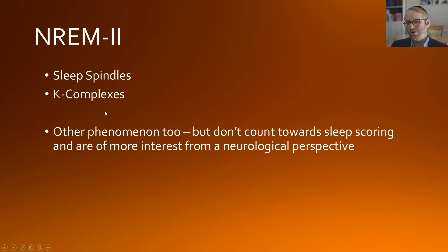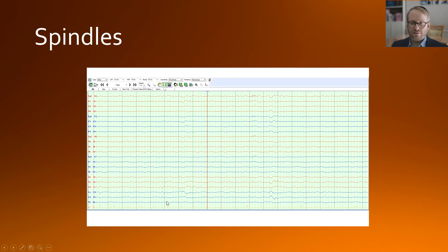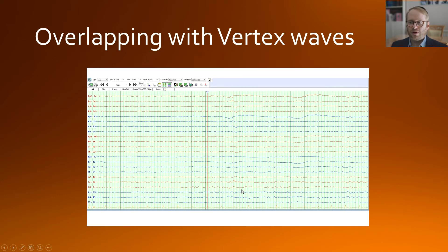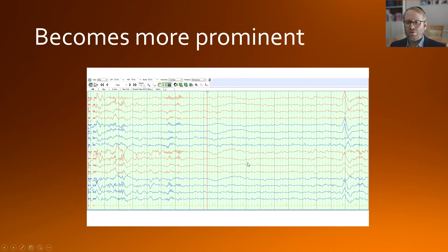There are other phenomena of interest from a neurophysiologist's perspective that can also occur in non-REM 2, but they don't factor into sleep scoring and are more of neurological interest. After the V waves become more prominent, one starts to see the emergence of sleep spindles, which at some point start overlapping with the vertex waves and become designated as k-complexes. All of this becomes more prominent as the descent into sleep becomes more established — you can see spindle activity with vertex waves, pure spindles, and large vertex waves with spindle activity.